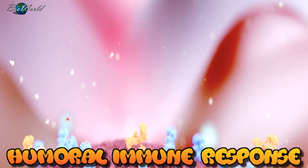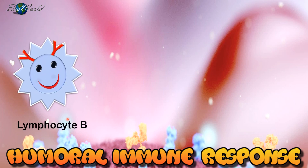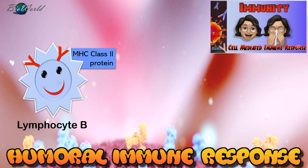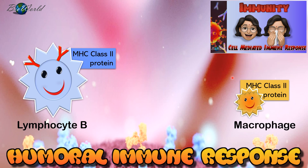The humoral immune response is carried out by lymphocyte B. On its surface, it has proteins called the MHC class II protein. Now if you've seen my video on the cell-mediated immune response, I would have introduced to you that the macrophage also has surface proteins from the MHC class II category. But unlike the macrophage, lymphocytes have an extra protein in the form of immunoglobulins. The immunoglobulin is from the class IgD.